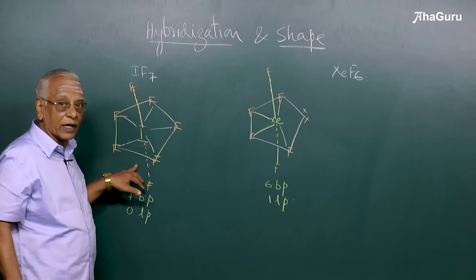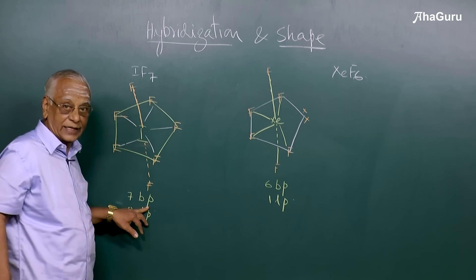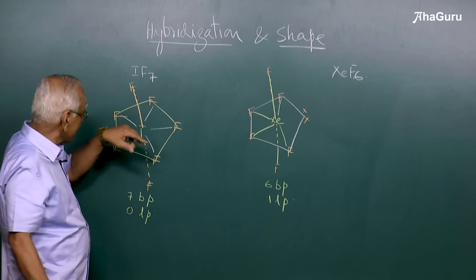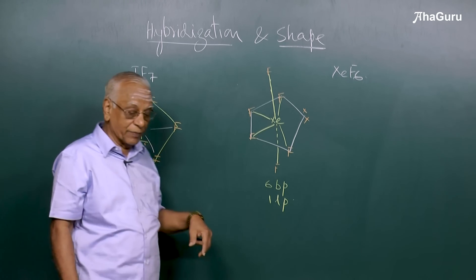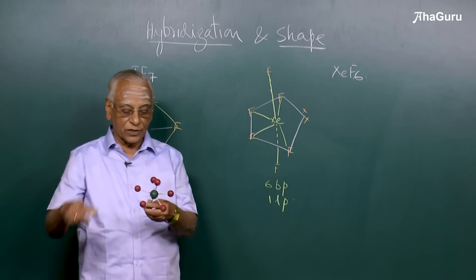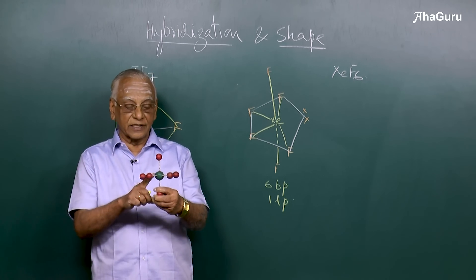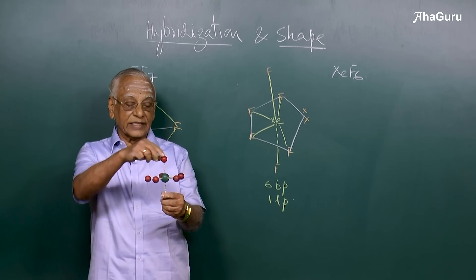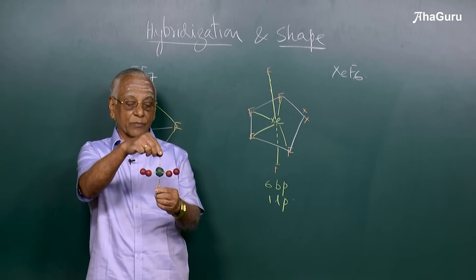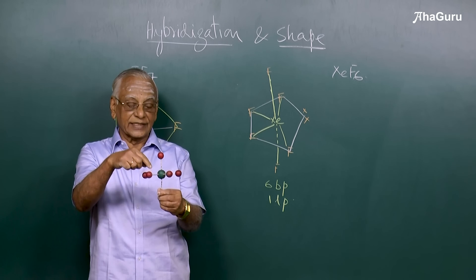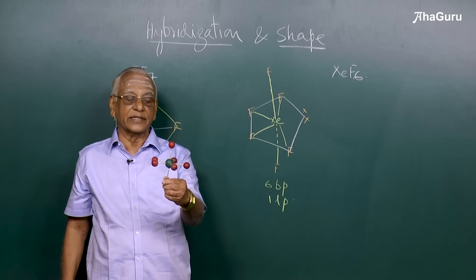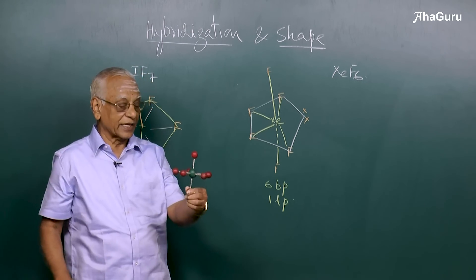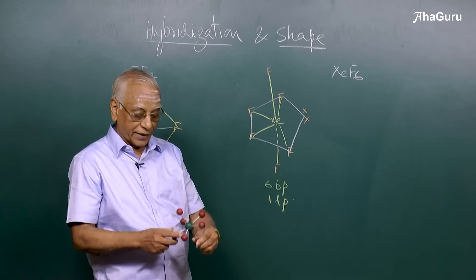If all the electron pairs are bond pairs and there is no lone pair, then the hybridization and the shape are identical. The central atom — iodine, shown in green — is surrounded by seven fluorine atoms. Two of these bonds are called axial bonds and five are called equatorial bonds. This gives a pentagonal bipyramid shape, and there is no lone pair here.